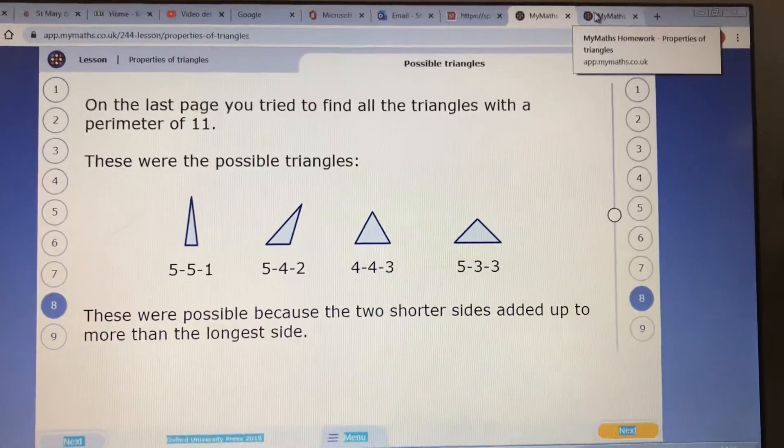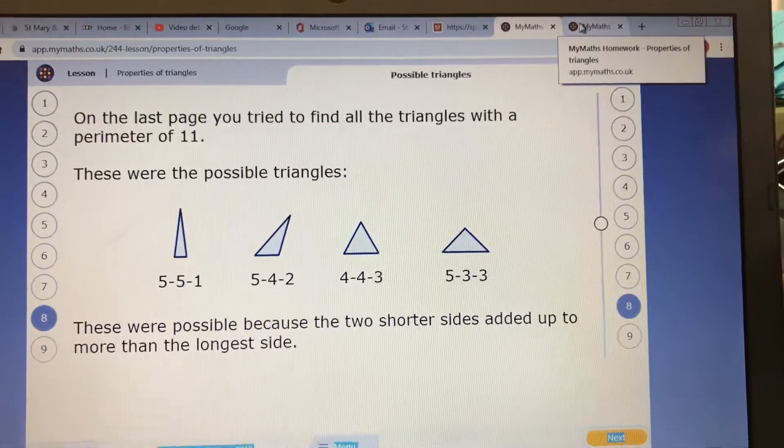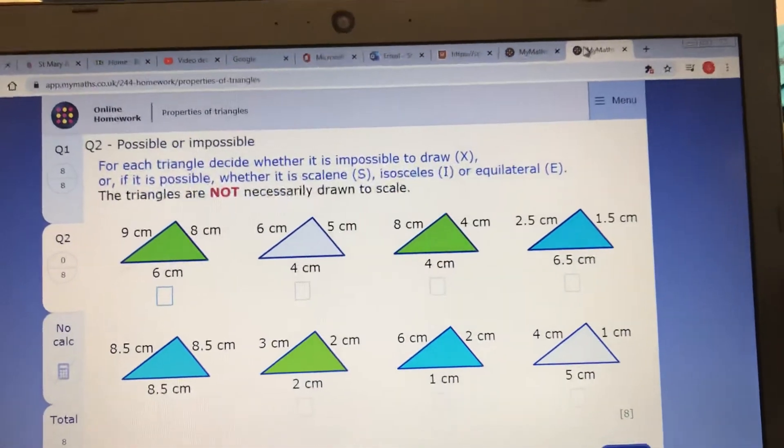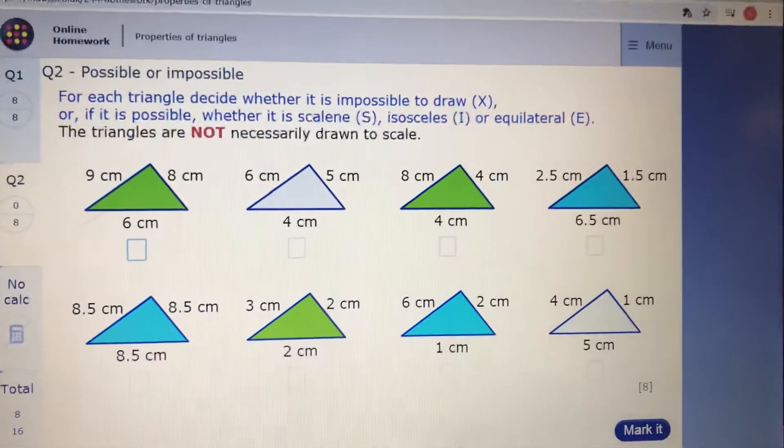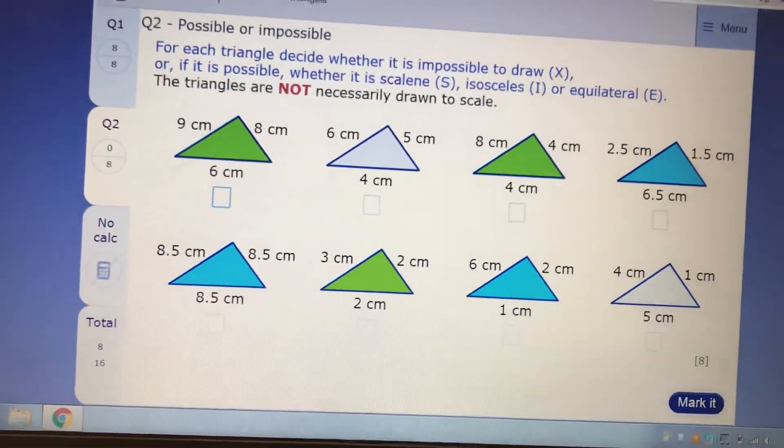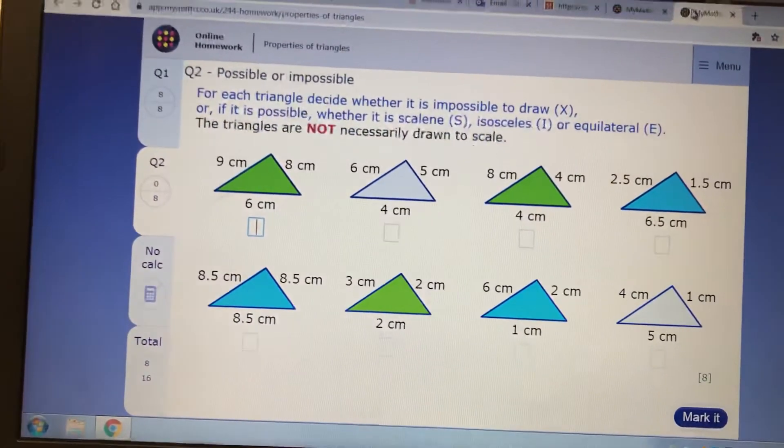The two shorter sides of a triangle must add up to more than the longest side. That would make those that don't impossible. The two shorter sides must add up to the longer side. Well, let's get the easy ones out the way to start with.